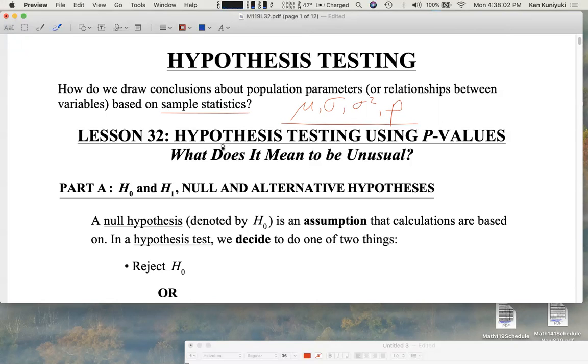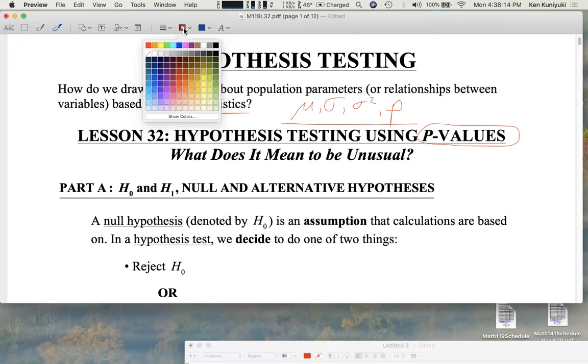In lesson 32, we're going to talk about hypothesis testing using p-values. There are other methods, but we're going to focus on the p-value approach first. We're also going to talk about the issue of what it means to be unusual.